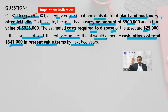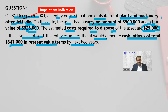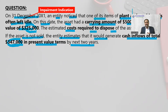Carrying amount is compared with the recoverable amount, which is the higher of fair value less cost to sell. Fair value is 325,000, cost to sell is 25,000, so that gives 300,000 for fair value less cost to sell. And the value in use is 347,000. We take the higher figure, which is 347,000, and compare with the carrying amount. We identify the impairment loss with mathematics, then record and report it in the financial statement.